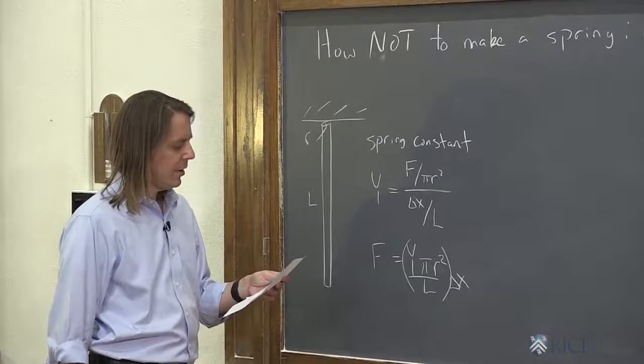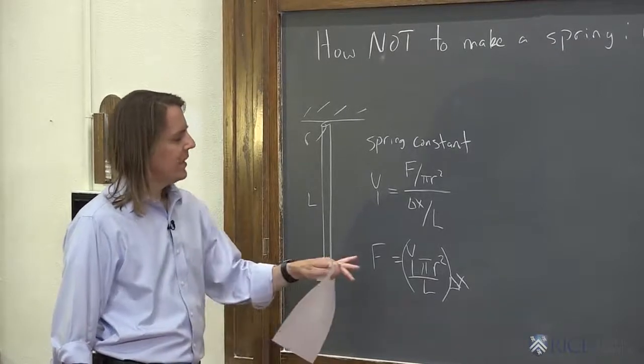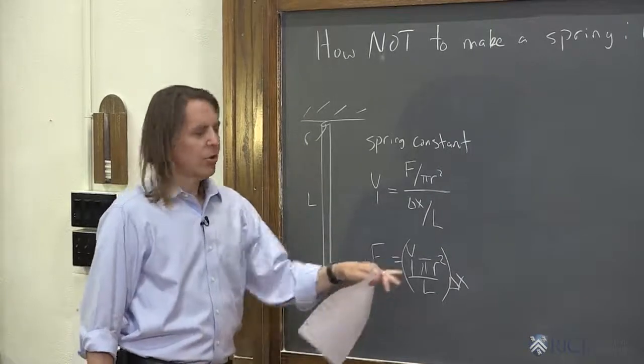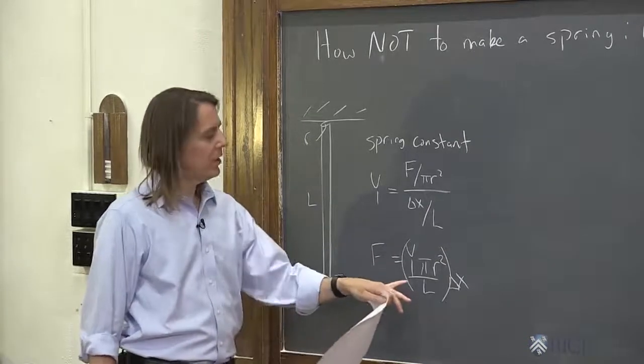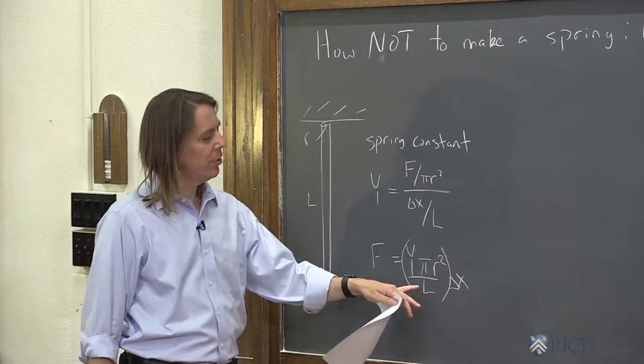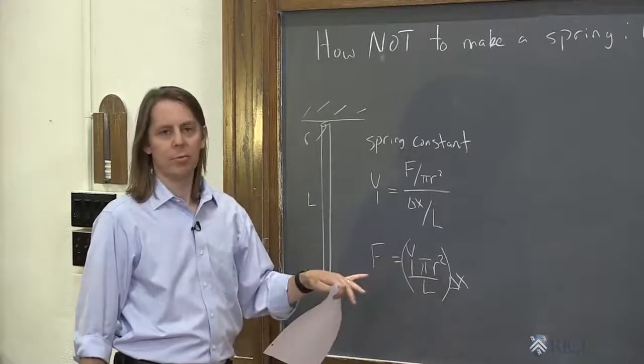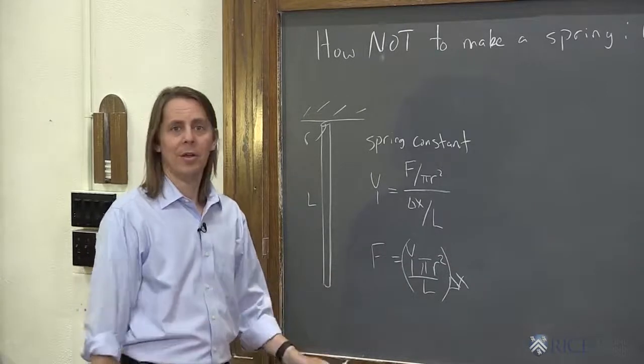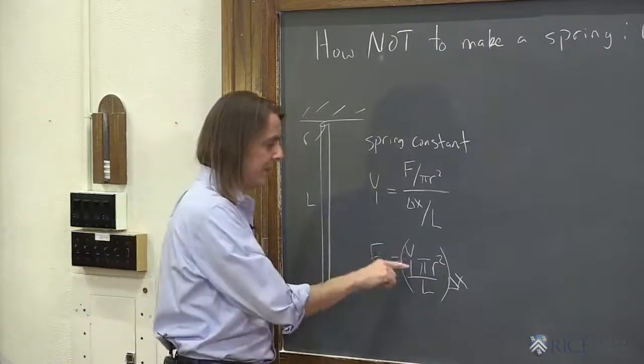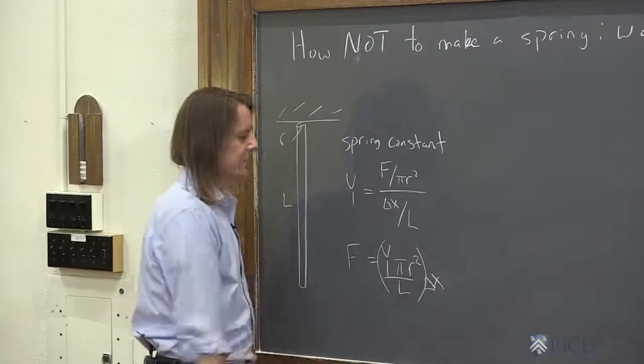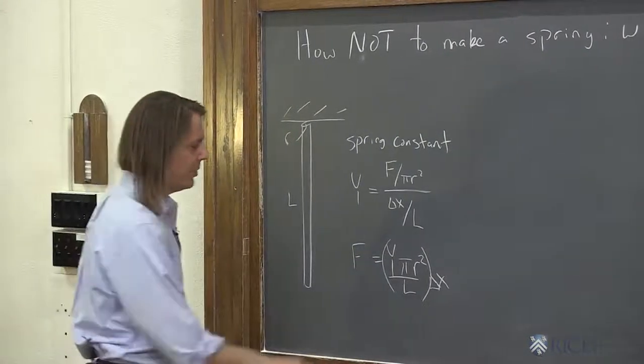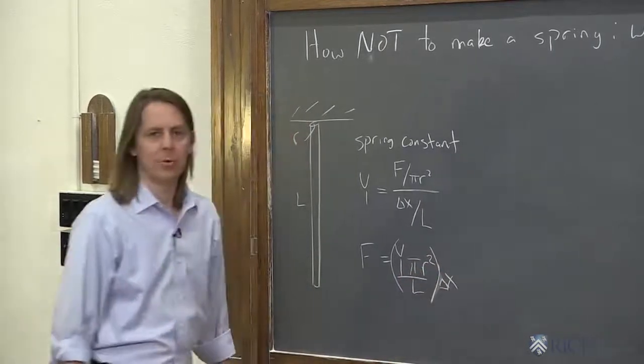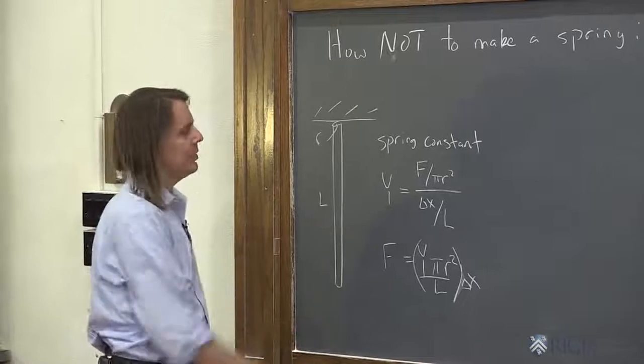You can achieve a spring constant this way by changing R or L. You can have a really long wire to get a low spring constant, or a really thin wire to get a low spring constant, and vice versa. The Young's modulus of copper is an intrinsic property you can't change. So this doesn't really completely design the spring for us. We need another parameter.